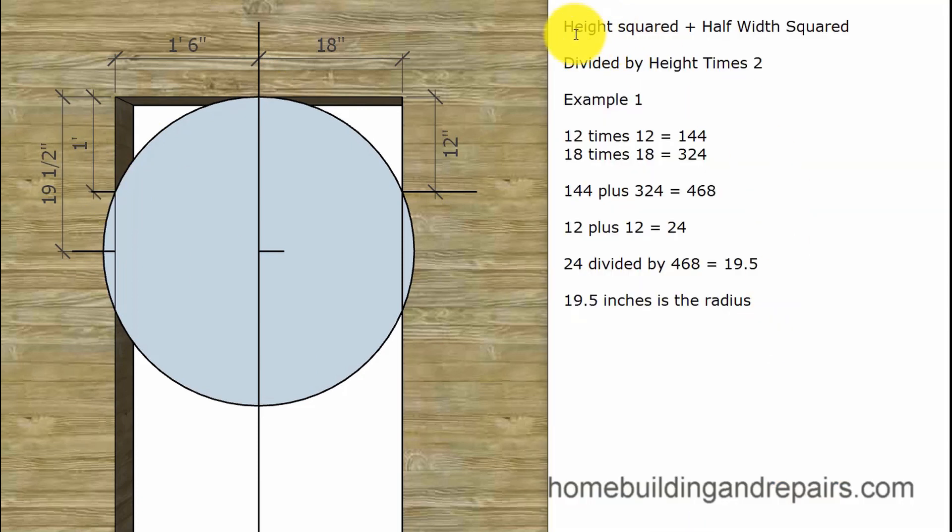The measurement that I come up with by using the formula which I'll show you in a second is 19 and a half inches from the top down to here. Then we'll simply draw a 19 and a half inch radius. You can see where it connects perfectly at the marks where we want it to. Dead center in the opening and in our one foot section there. Now here's the formula: Height squared plus half the width squared, divided by the height times two.